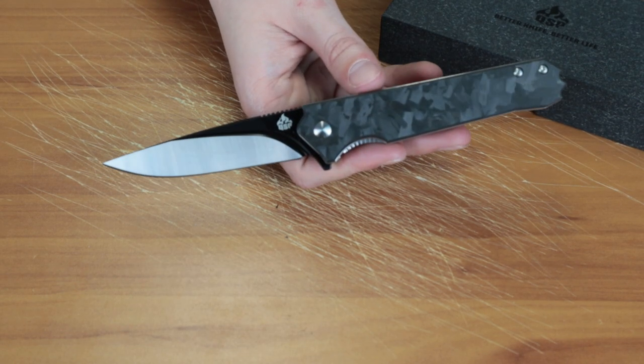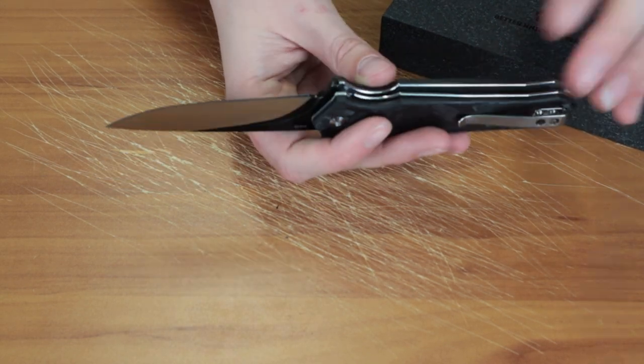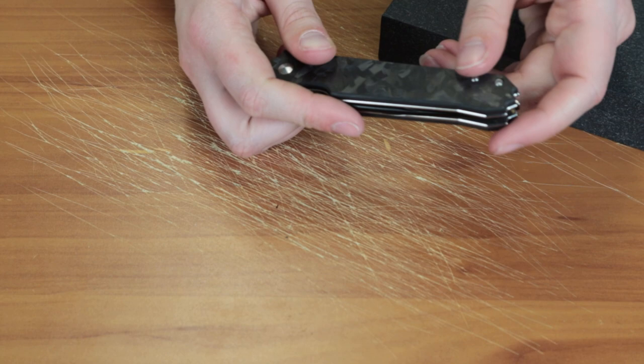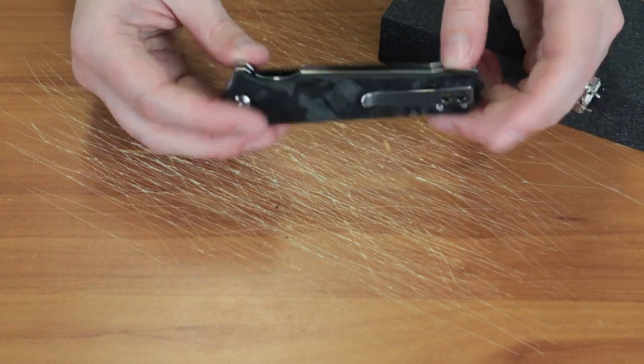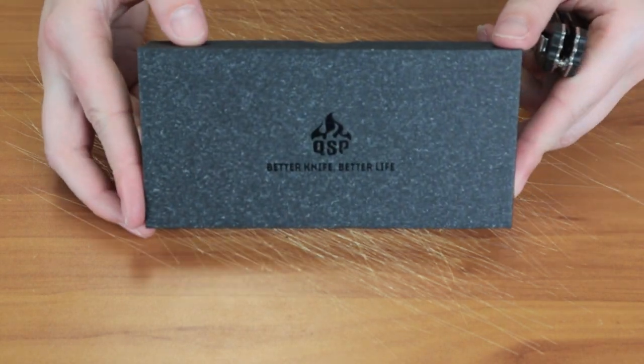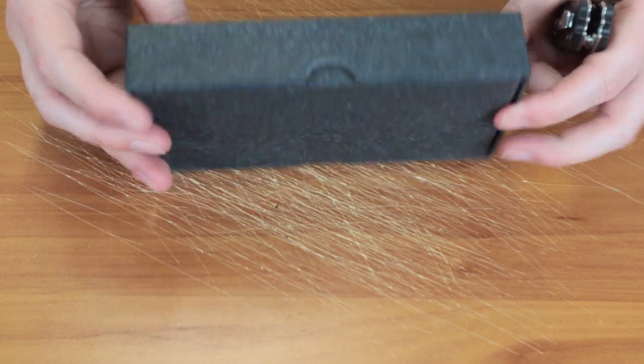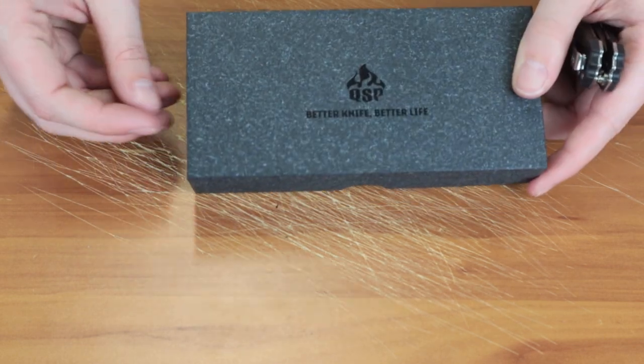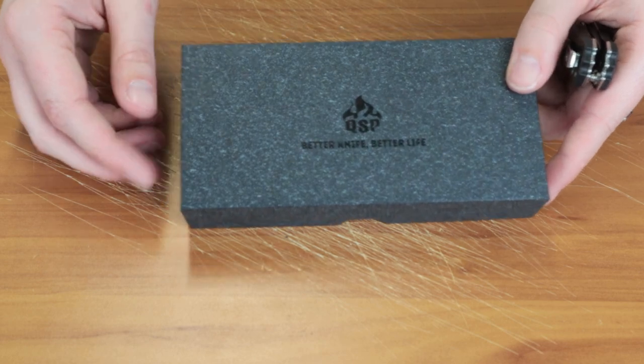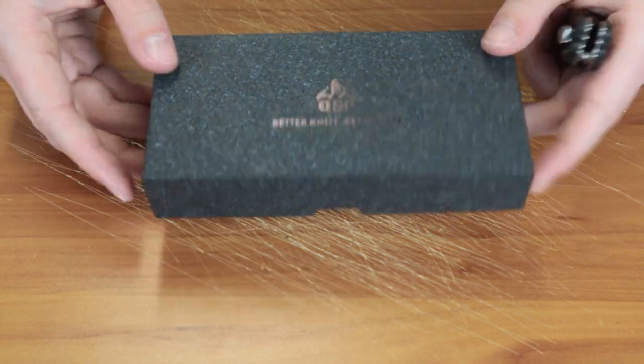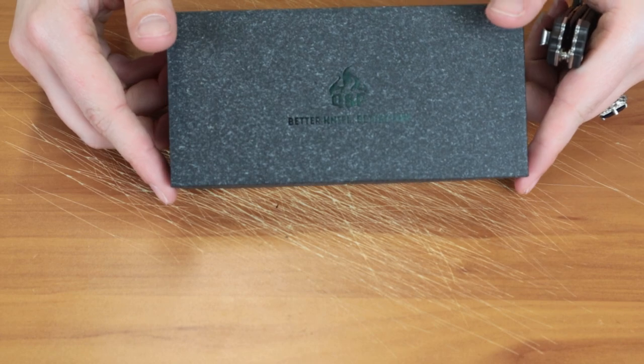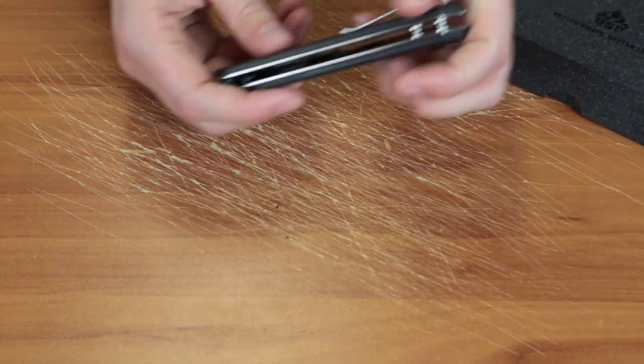I think it just has that look and it just has that feel. It does come with the QSP box. This one's a little different than what I usually see. I usually see like a black one for some of their higher end knives or the brown one with the little drawer but they went with this one this time. It's also got stickers. I'm not going to take them out but they're in there.